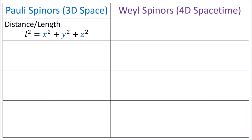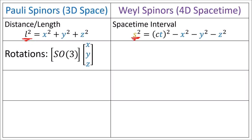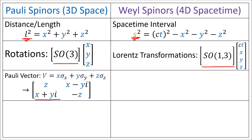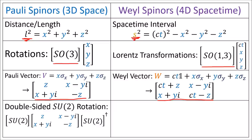In 3D space, we calculate the squared length of a vector using Pythagoras' theorem: x squared plus y squared plus z squared. In 4D spacetime, we instead calculate the square of the spacetime interval s squared, which is time squared minus the space component squared. The length of 3D vectors is held constant during rotations done with SO(3) matrices, while the spacetime interval of 4D spacetime vectors is held constant under Lorentz transformations done with SO(1,3) matrices. We can rewrite 3D vectors as 2x2 matrices called Pauli vectors, and 4D spacetime vectors as 2x2 matrices called Weyl vectors.